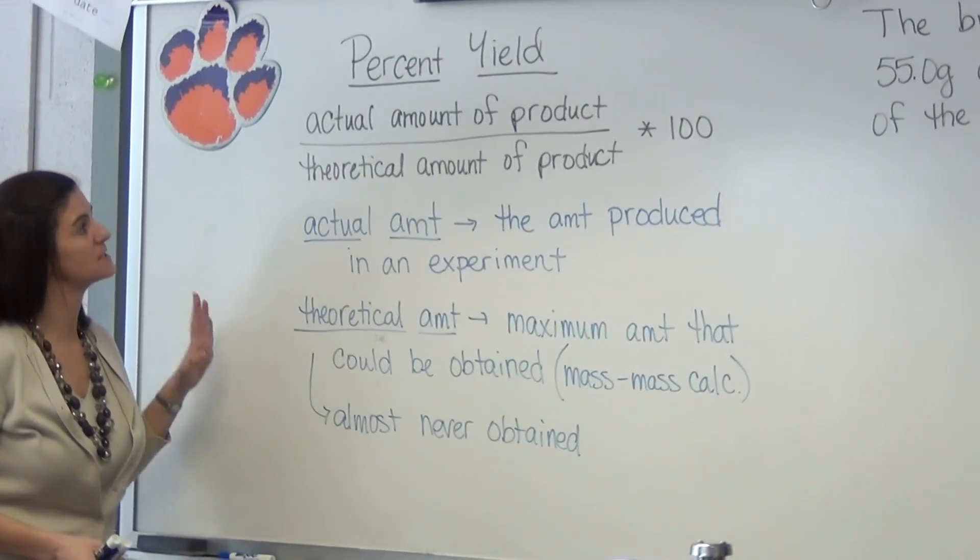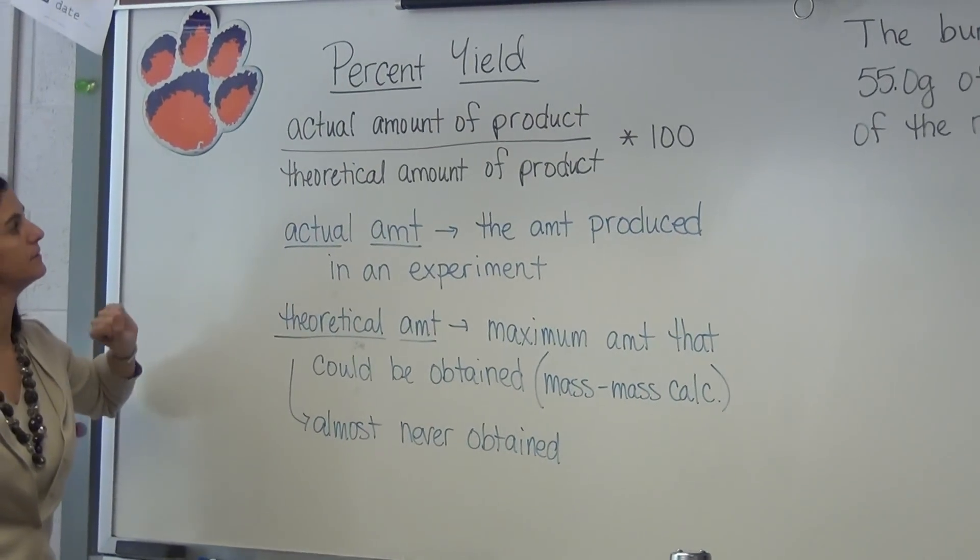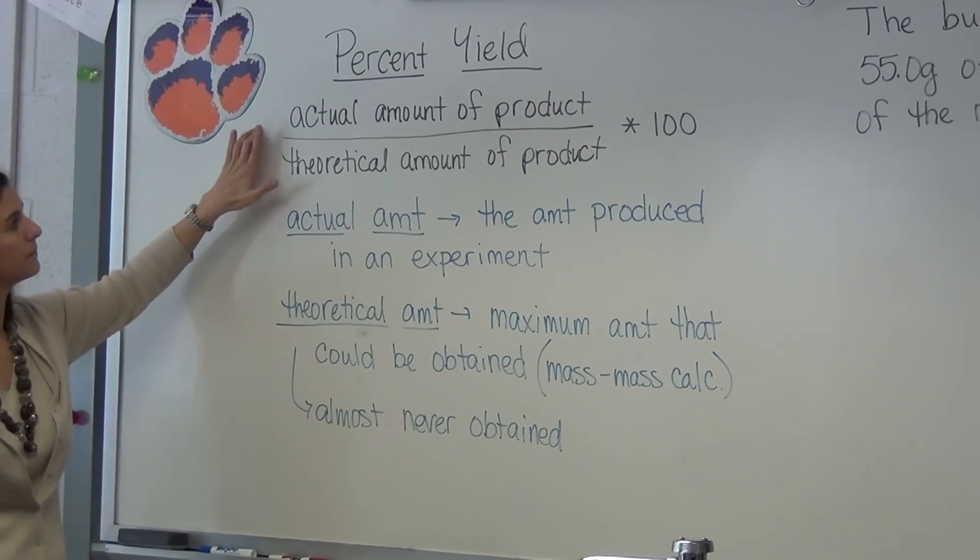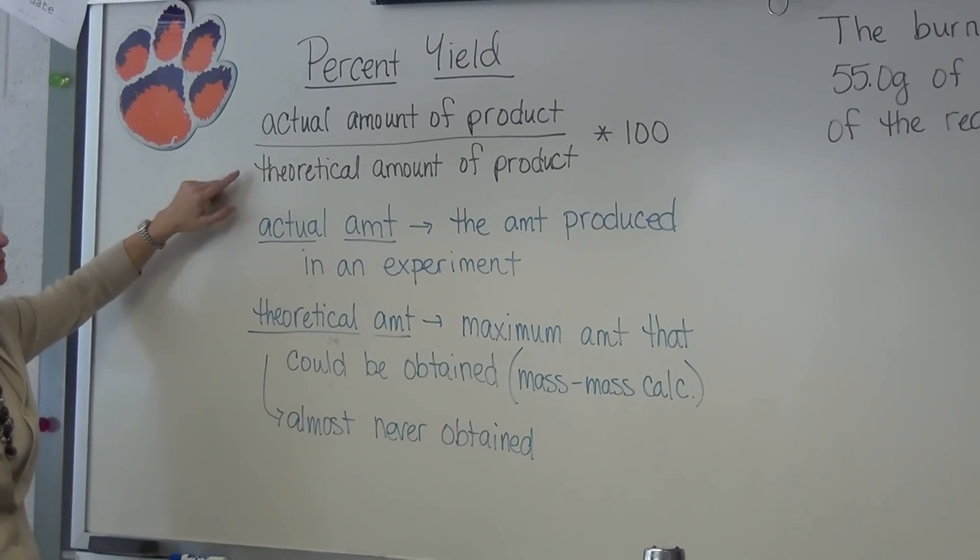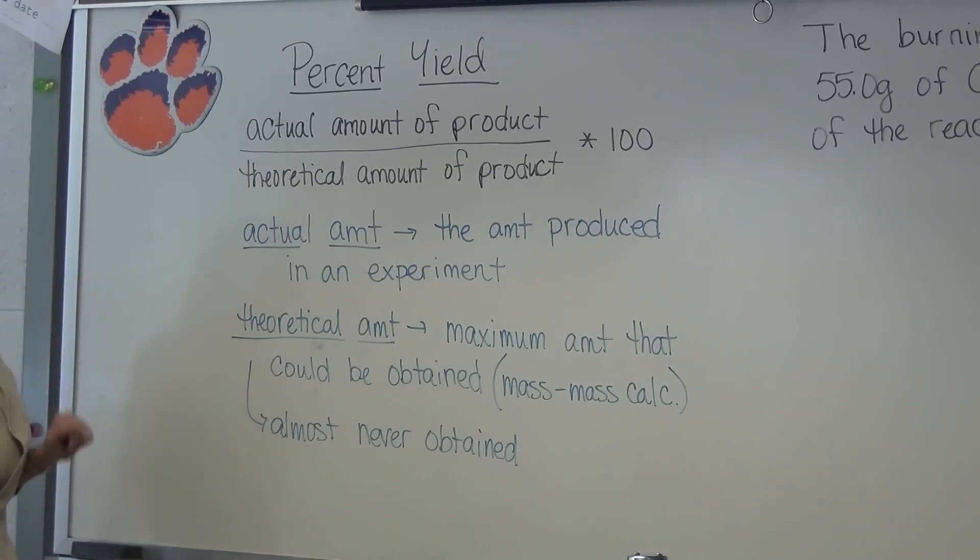Okay, today we're going to talk about percent yield. It's another example that you're going to have to use stoichiometry, but here's your formula. The actual amount of product over theoretical amount of product times 100. That'll give you your percent yield.